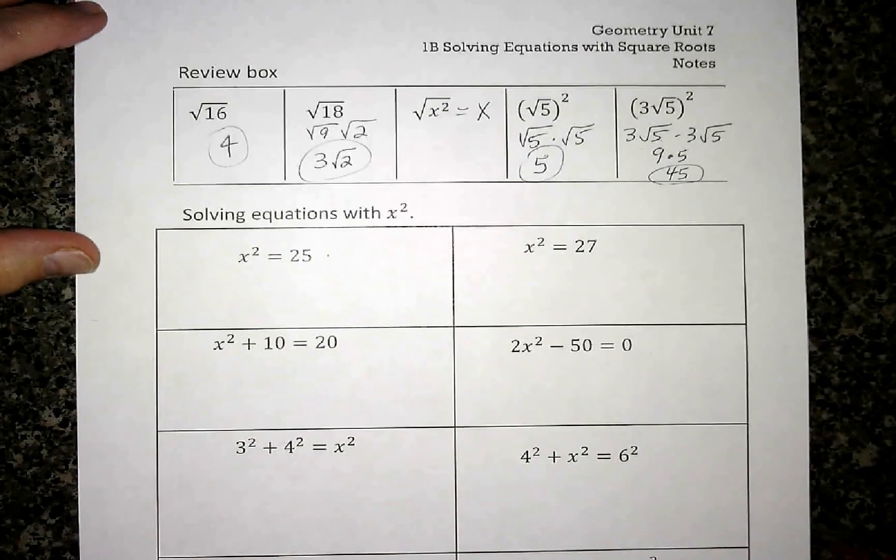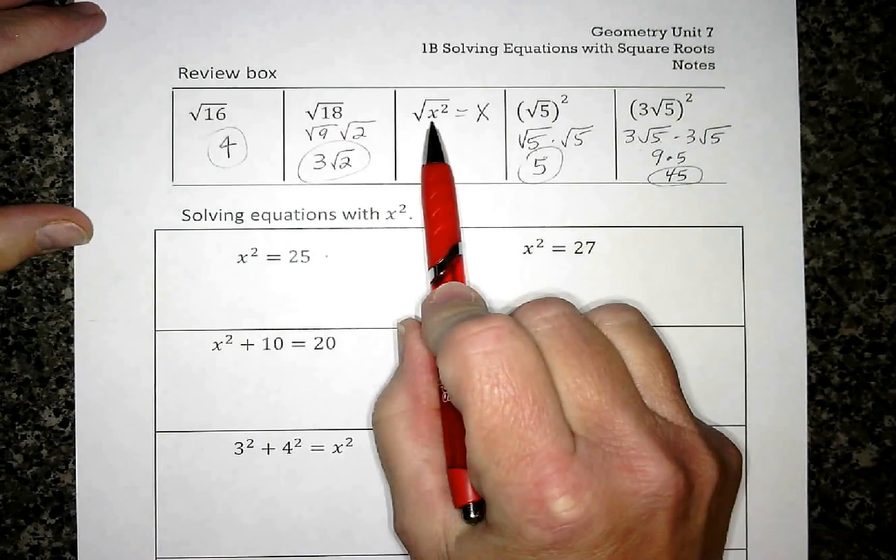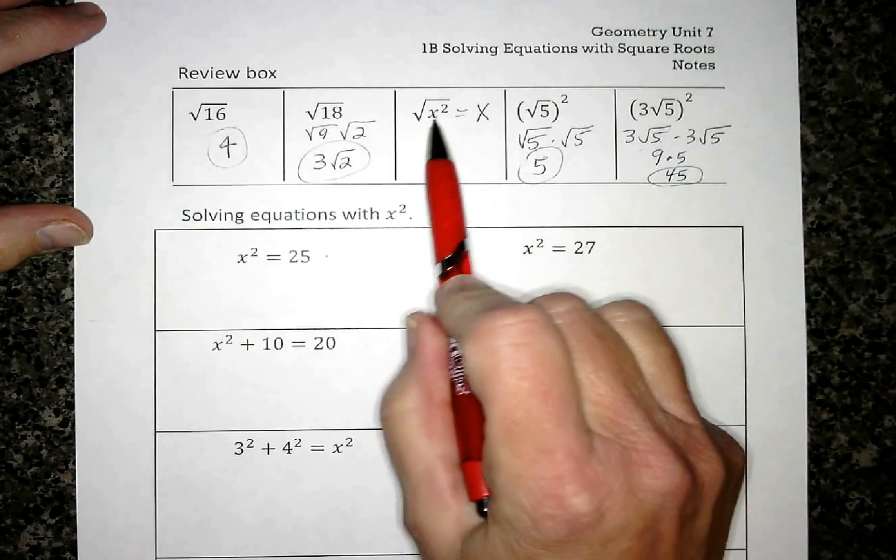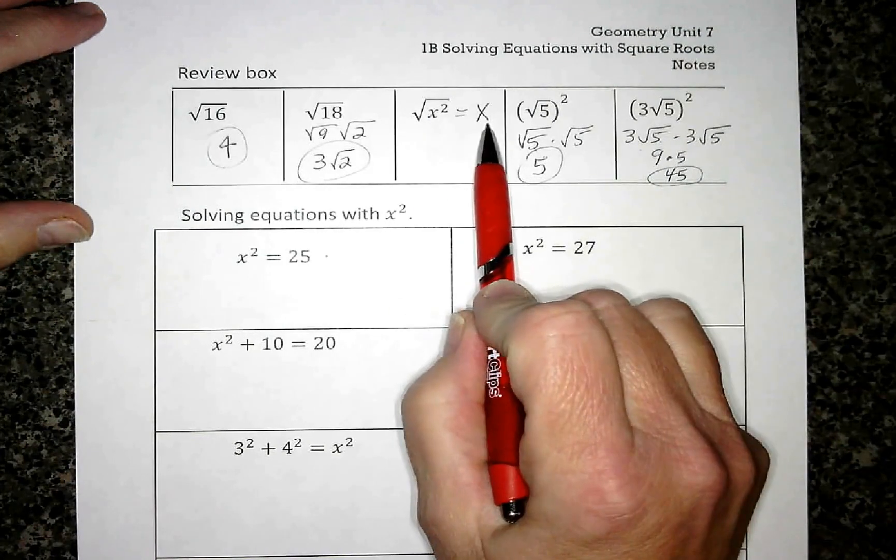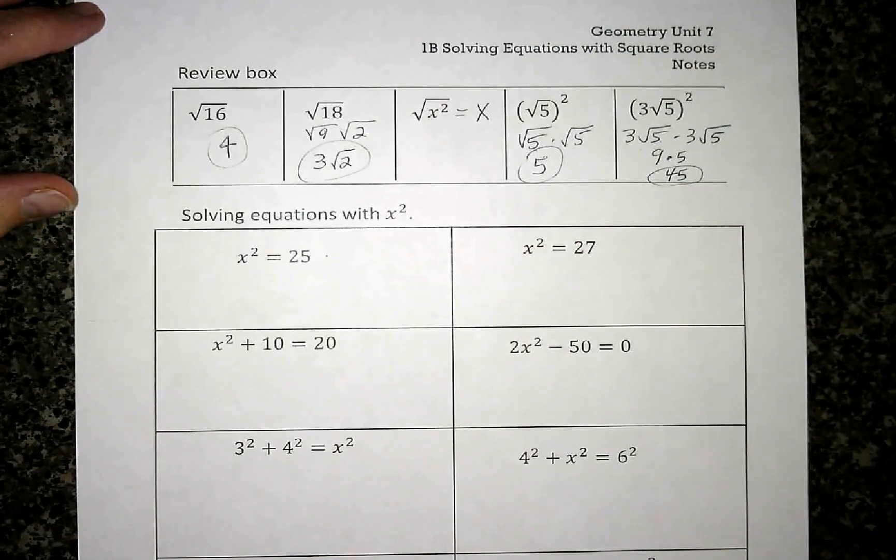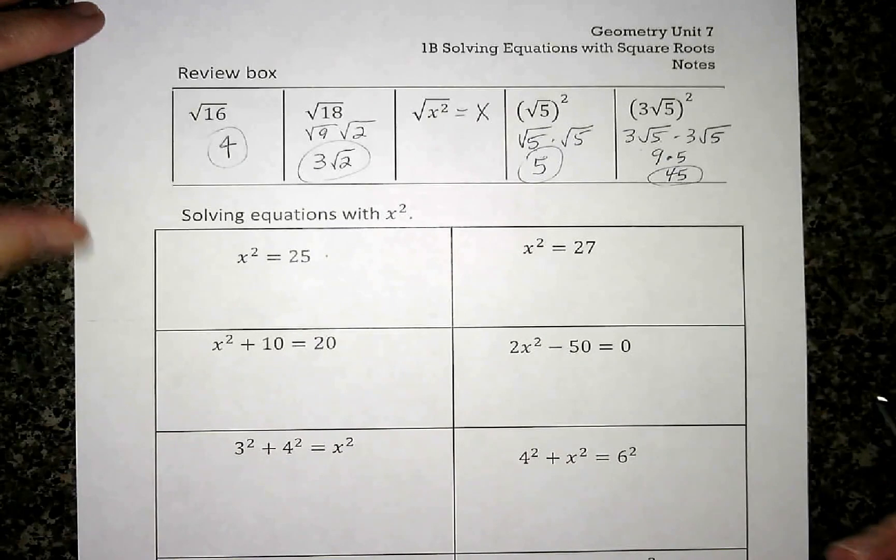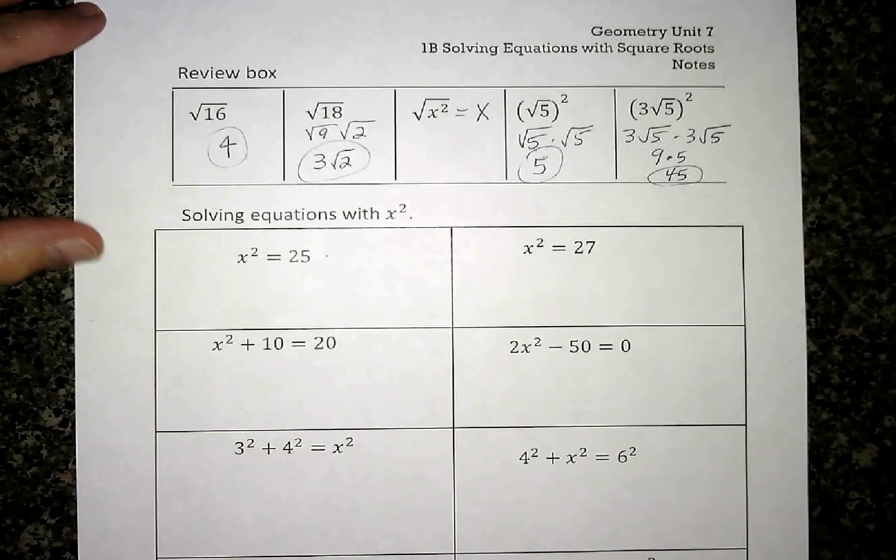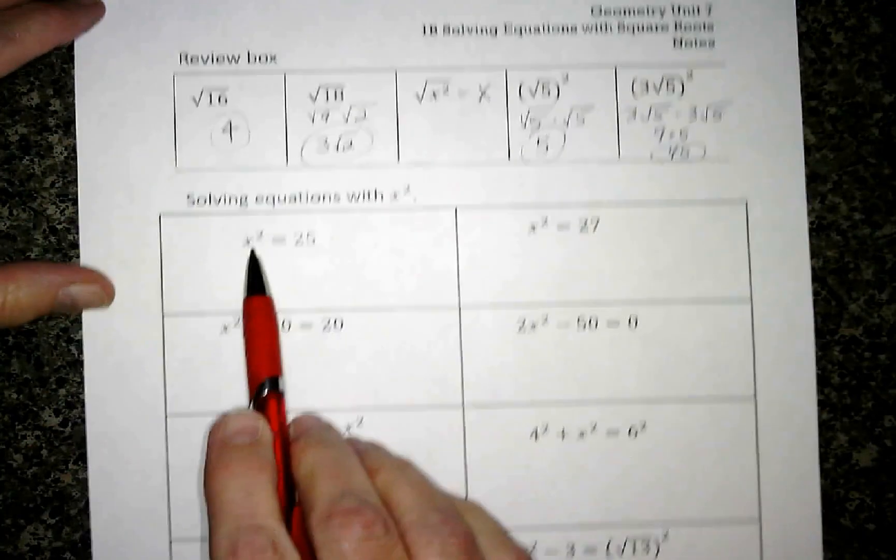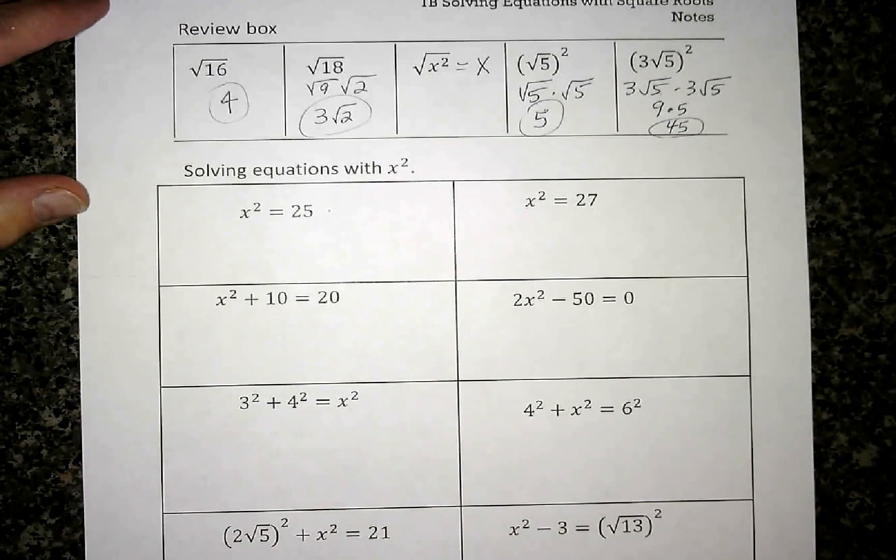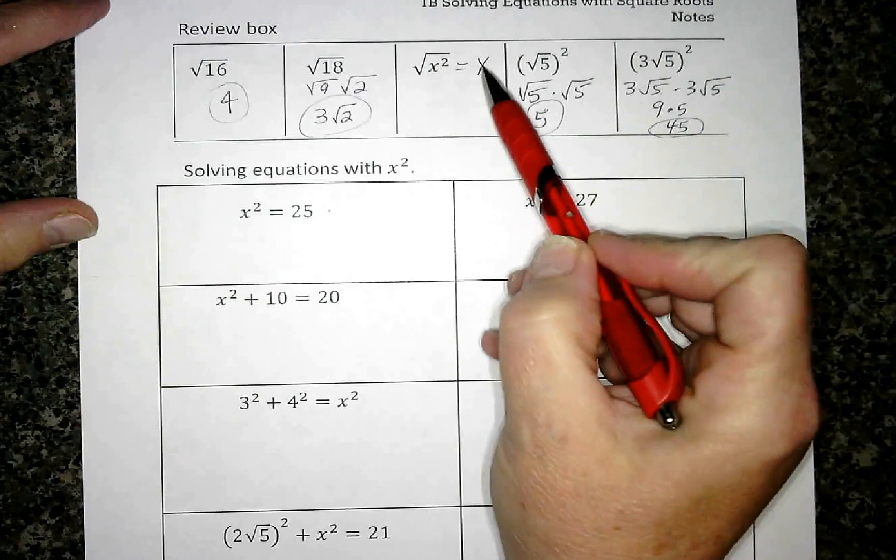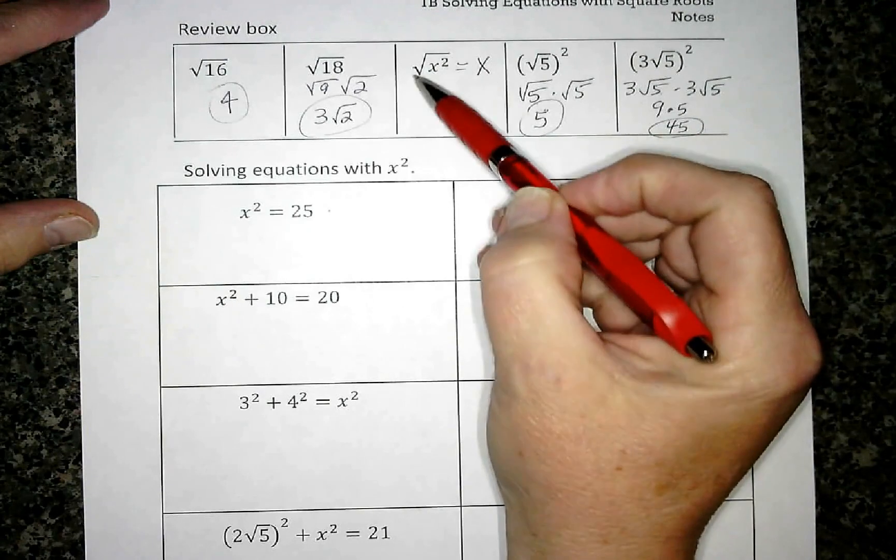So right here we had this square root of x² and the result of that was just a plain old x. When we solve equations, usually we want to solve for the variable or solve for x. So when I come down here to solve these equations with x² in it, I don't want x², I want x. So to get from x² to x, I need to square root.